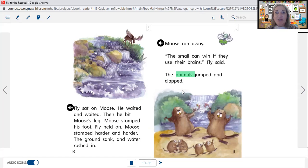I got excited too. I was so proud of Fly. So Fly sat on Moose and bit him. I did not see that one coming. Moose stomped his big feet and then the water rushed into the holes that Moose's feet made, and Moose ran away. He must have not liked that feeling of getting bit by the fly. And the animals learned that small can win if they use their brains.